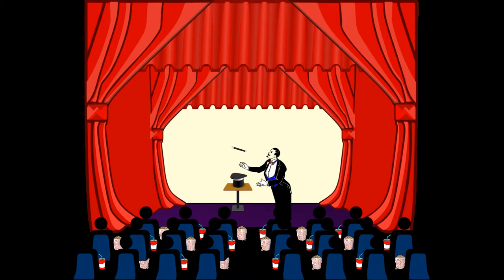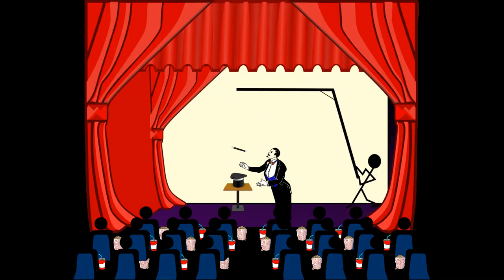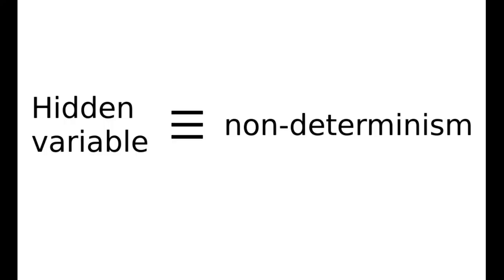At all. Its only role is to be incomprehensible. It is the curtain behind which we are not supposed to look, and if we do peek behind that forbidden curtain, what do we find? We find that a hidden variable is exactly the same thing as non-determinism.